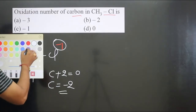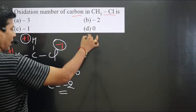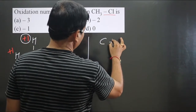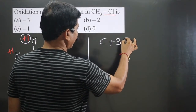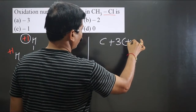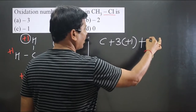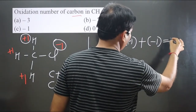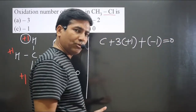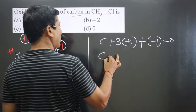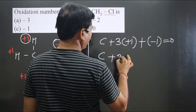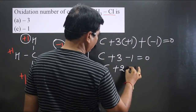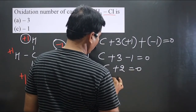We can use the common oxidation rule also. One carbon is there, three hydrogens each at +1, and one hydrogen at -1, equal to zero because it is a neutral compound. So carbon + 3(+1) + 1(-1) = 0, giving carbon + 2 = 0.